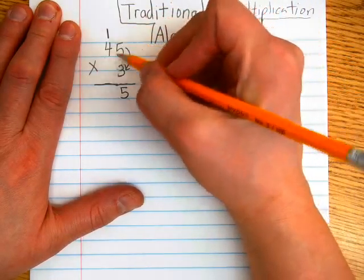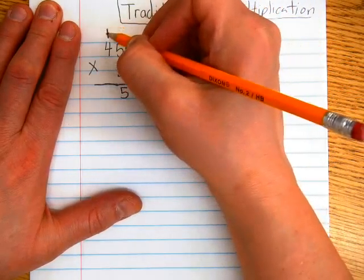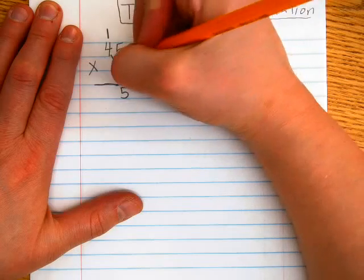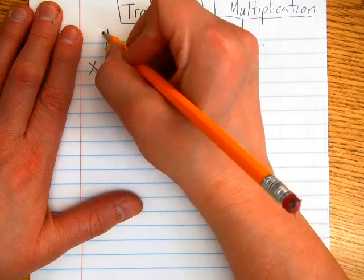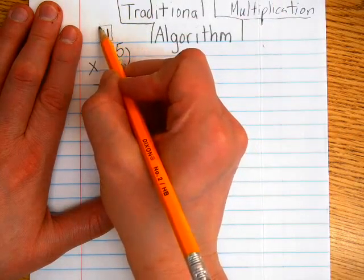But just like when we add, we're not going to write 15 down here. That's two numbers in one spot. So we don't want to do it that way. But what we are going to do is we're going to write 15 like this. The 5 here, and then we're going to carry the 1 over here.